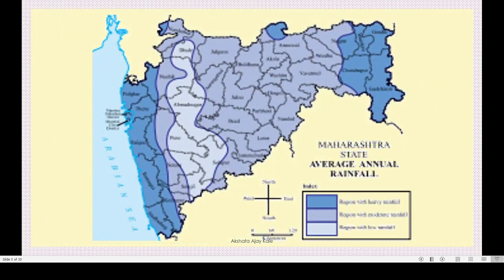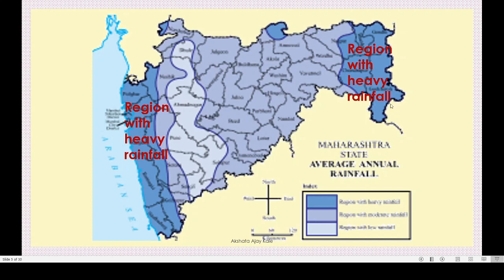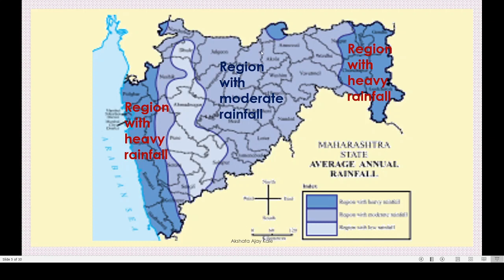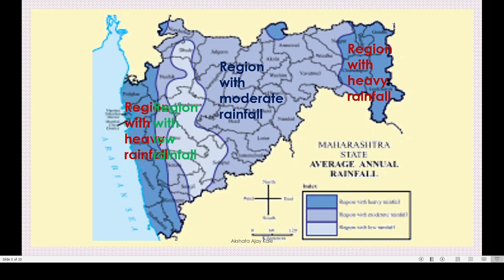Now see this map. This map shows the average annual rainfall. Here you can see three different colors - dark blue, light blue, and very light blue. The dark blue means region with heavy rainfall - the Konkan region and the eastern side region get heavy rainfall. The light blue means region with moderate rainfall. The very light color shows the region with low rainfall.